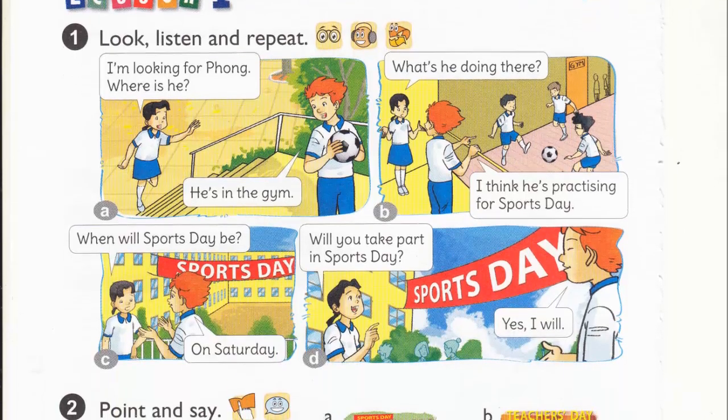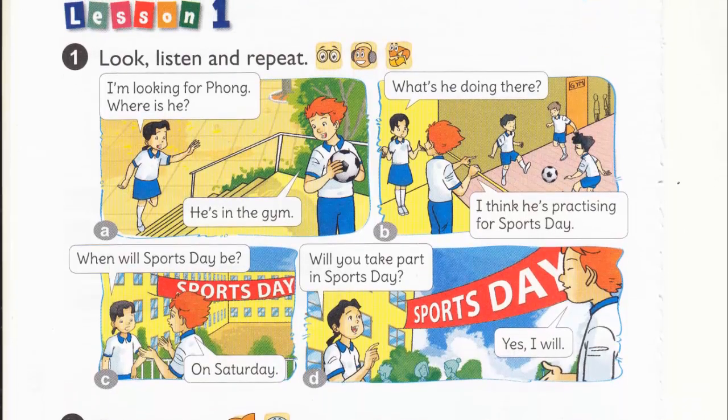A. I'm looking for Phong. Where is he? He's in the gym. B. What's he doing there? I think he's practicing for sports day.